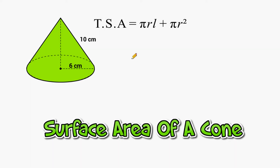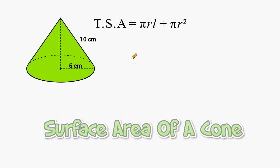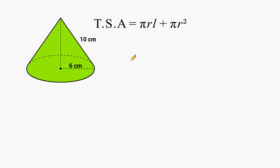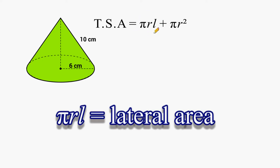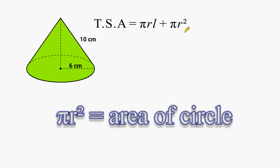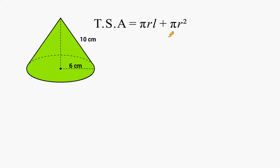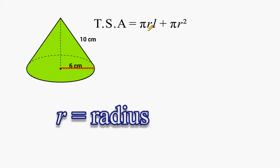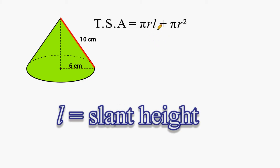In this video we're going to figure out the total surface area of a cone when the slant height is given, and then when the slant height is not given. We're going to use the formula πrL plus πr². This equation is comprised of two main parts: πrL gives us the lateral area of the cone, which is the area of the side, and πr² gives us the area of the circular surface. We need to find the values of r (radius) and L (slant height).